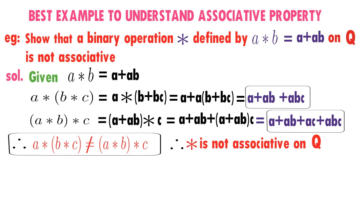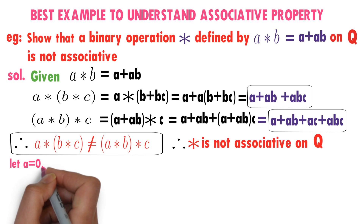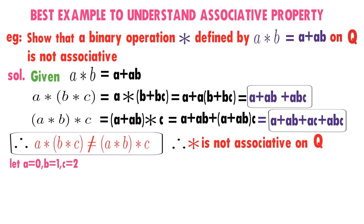However, observe here — we declared that a★(b★c) is not equal to (a★b)★c, but it seems it may not hold for any three rational numbers. Actually, that is not true. There are some rational numbers which satisfy a★(b★c) = (a★b)★c. For example, let a = 0, b = 1, c = 2.